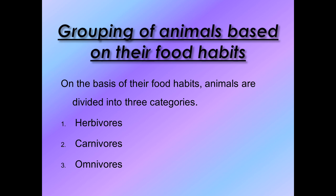Now what are omnivores? Obviously, herbivores eat plants, carnivores eat only meat - so omnivores, the word 'omni' is related to universal. Omnivores are animals that eat both plants and animals - meaning both plant products and meat. Those who eat both are placed in the omnivores category.